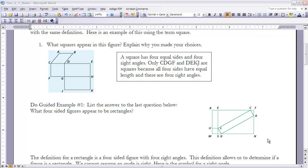Here's example one. It says, what squares appear in this figure? Explain why you made your choices. As you look at that picture, it's deliberately not very specific.